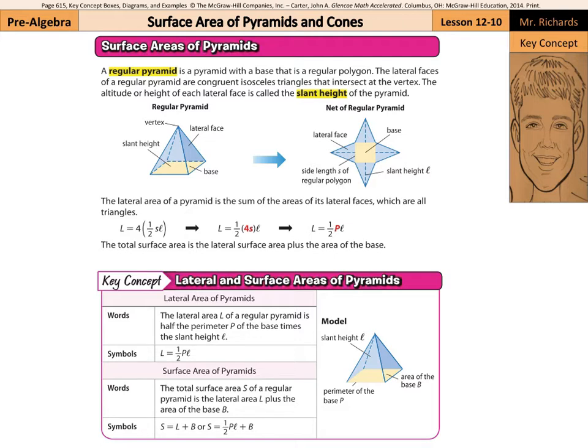The altitude or height of each lateral face is called the slant height of the pyramid. If we go ahead and draw this in here, that is the slant height of the pyramid. The lateral area of a pyramid is the sum of the areas of its lateral faces, which are all triangles — the blue triangles you see in the pictures here.